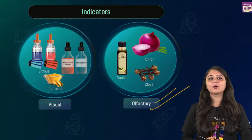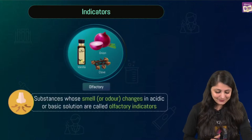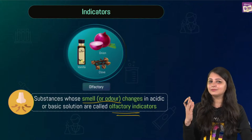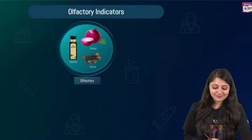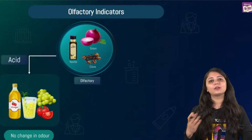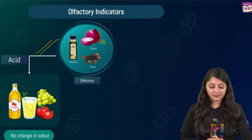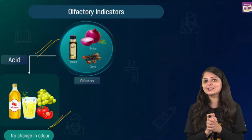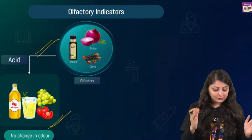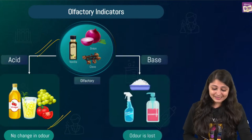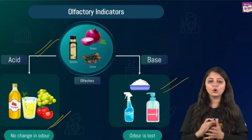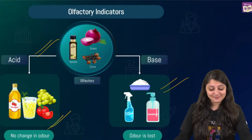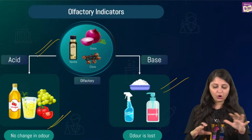Now coming to olfactory indicators. Olfactory relates to the sense of smell. These are substances whose smell changes in acidic or basic medium. Examples include onion, vanilla essence, and clove oil. In the presence of an acidic substance, onion retains its characteristic smell — no change in smell is observed. But in a basic medium, it loses its smell — the odor is lost.